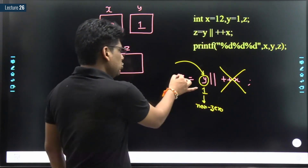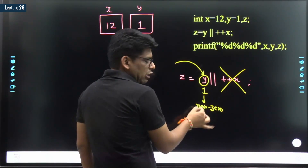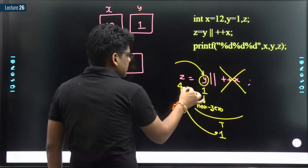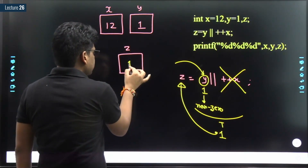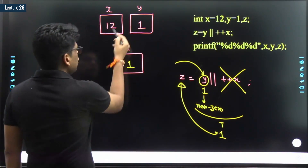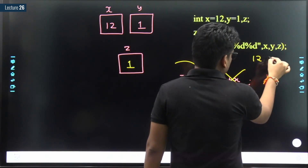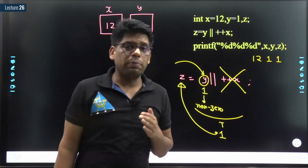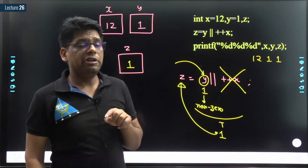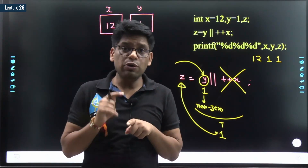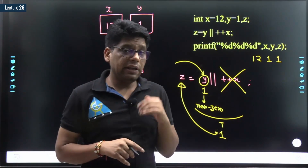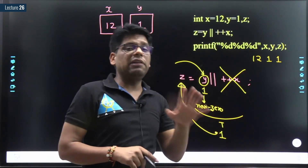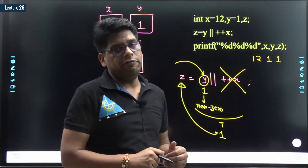Since at least one value is non-zero, the whole expression is true, so the value that goes into z is 1. That means the value of z is 1, the value of y is 1, and the value of x is 12, so the output of this code is 12, 1, 1. The short-circuit property depends on the first operand: for logical AND, if the first operand is 0 the compiler never evaluates the second; for logical OR, if the first operand is non-zero the compiler never evaluates the second.